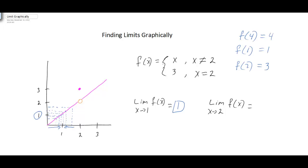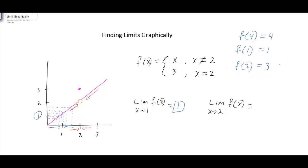Now we want to look at the same function, but what's the limit of the function as x approaches 2? If we're approaching 2 from the left and 2 from the right, you can see there's a hole in the graph. We know the function is defined at 2 to be equal to 3. But keep in mind — with limits, we don't care what happens at 2. We don't care what happens to the function at 2.